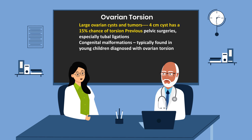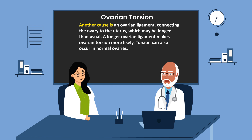Previous pelvic surgeries, especially tubal ligations, and congenital malformations are typically found in young children diagnosed with ovarian torsion. Another cause is an ovarian ligament connecting the ovary to the uterus which may be longer than usual. A longer ovarian ligament makes ovarian torsion more likely. Torsion can also occur in normal ovaries.